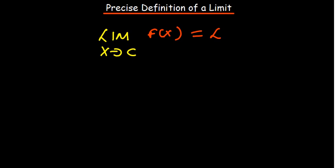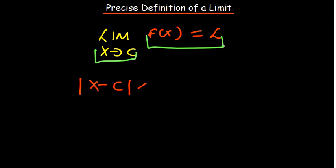We'll group two terms — this and that — and put a minus between them. Starting with the one on the bottom: it's x minus c, so its absolute value should be less than delta. Then the other part is f of x minus L, which should be less than epsilon.